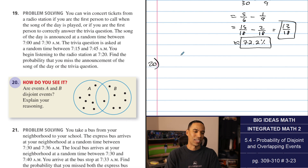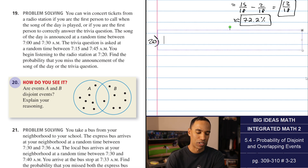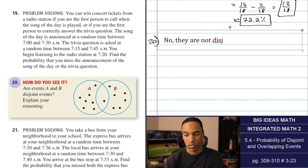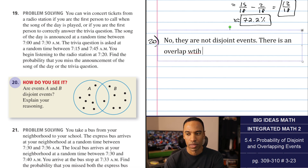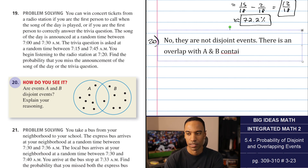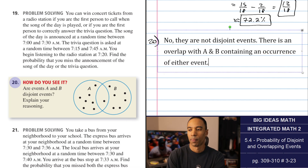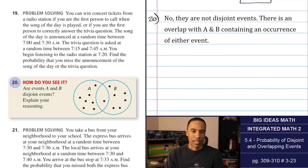Number twenty: are events A and B disjoint? No, they are not mutually exclusive. There is overlap — there is one outcome that is in both A and B, shown by that one dot right in the middle of the Venn diagram.